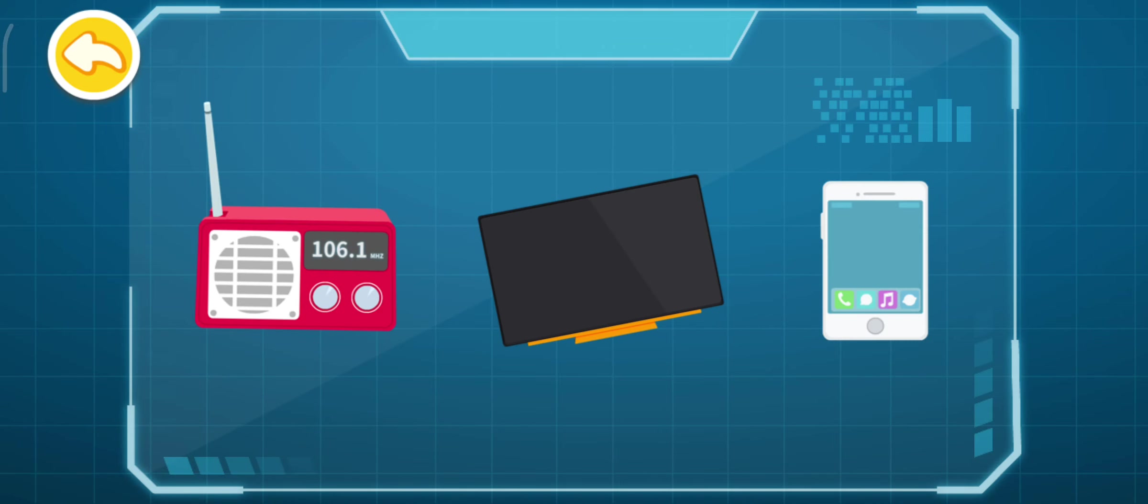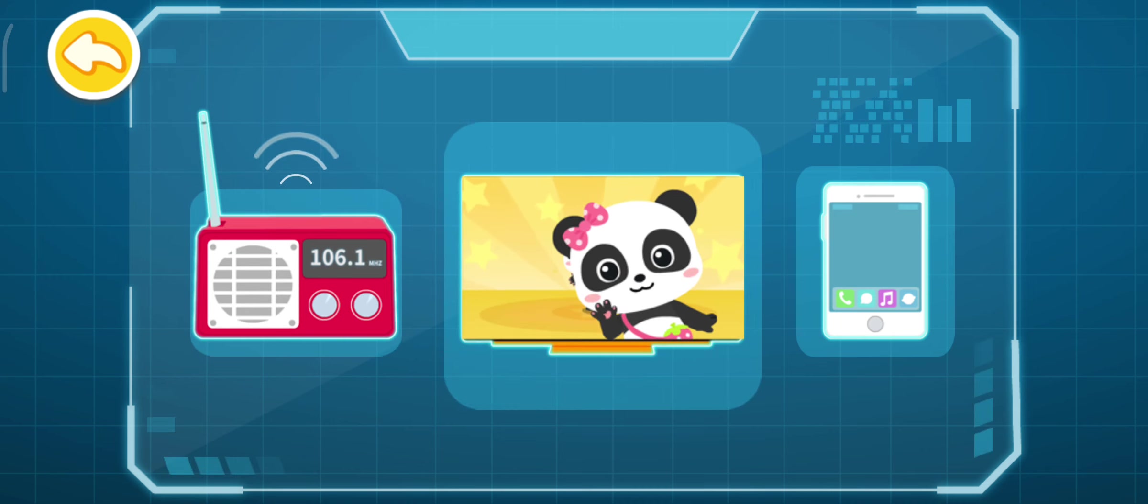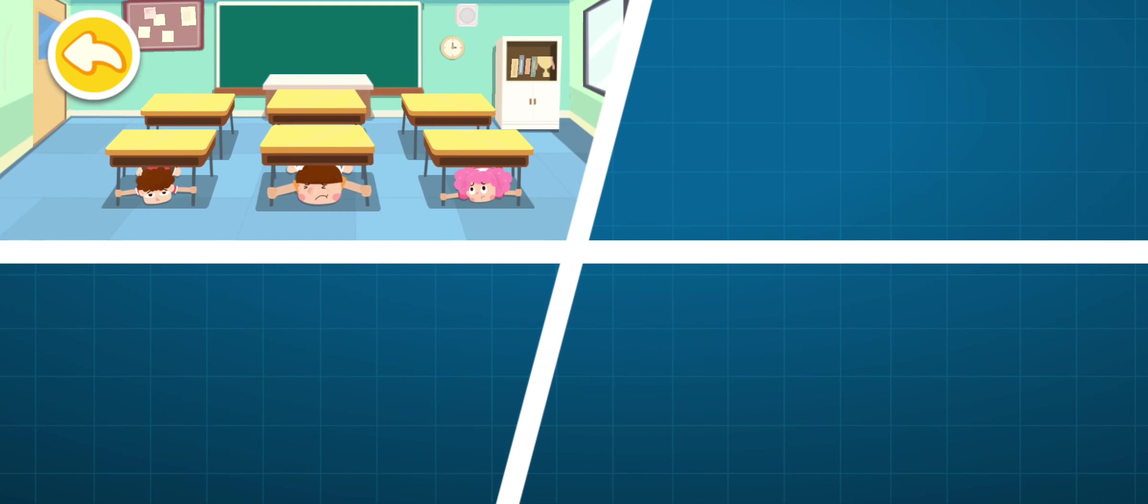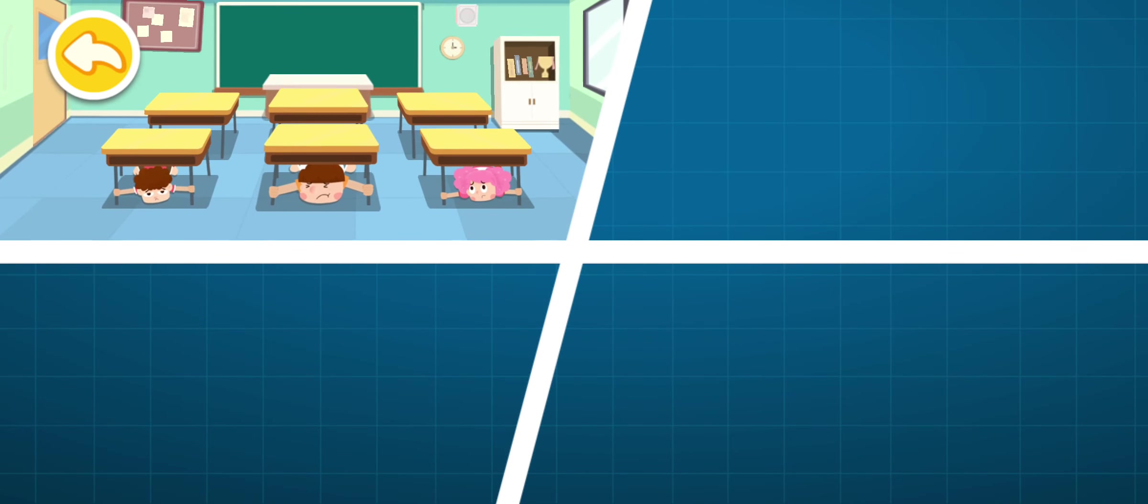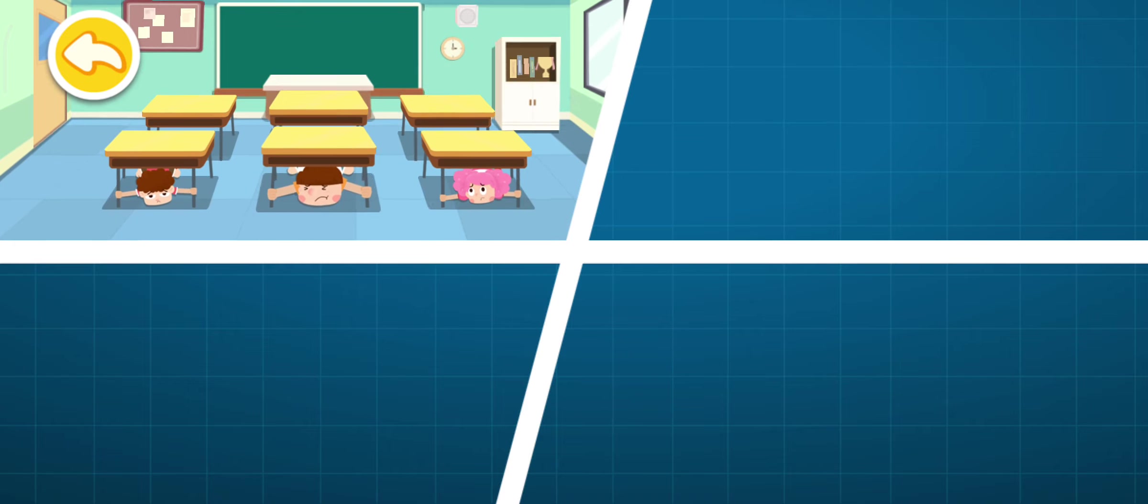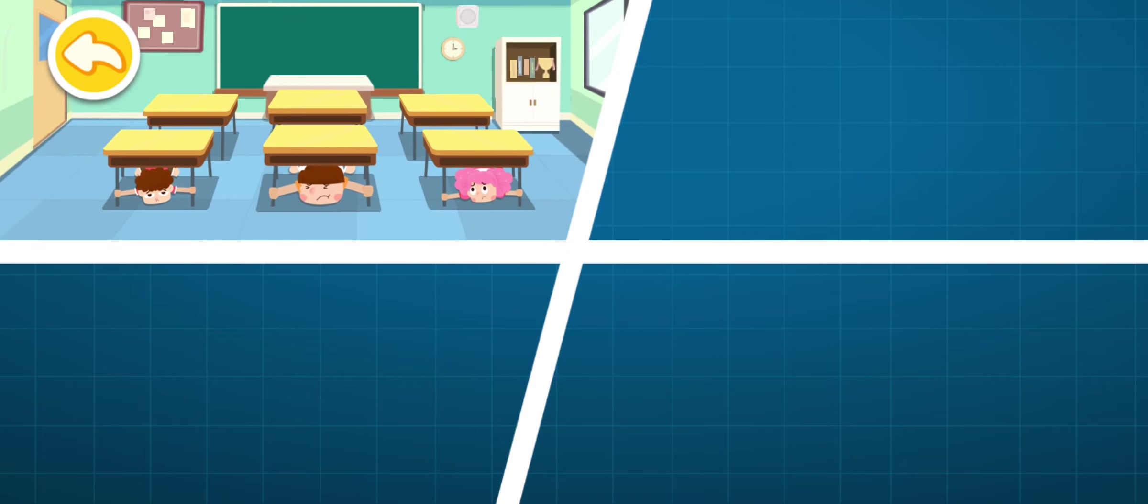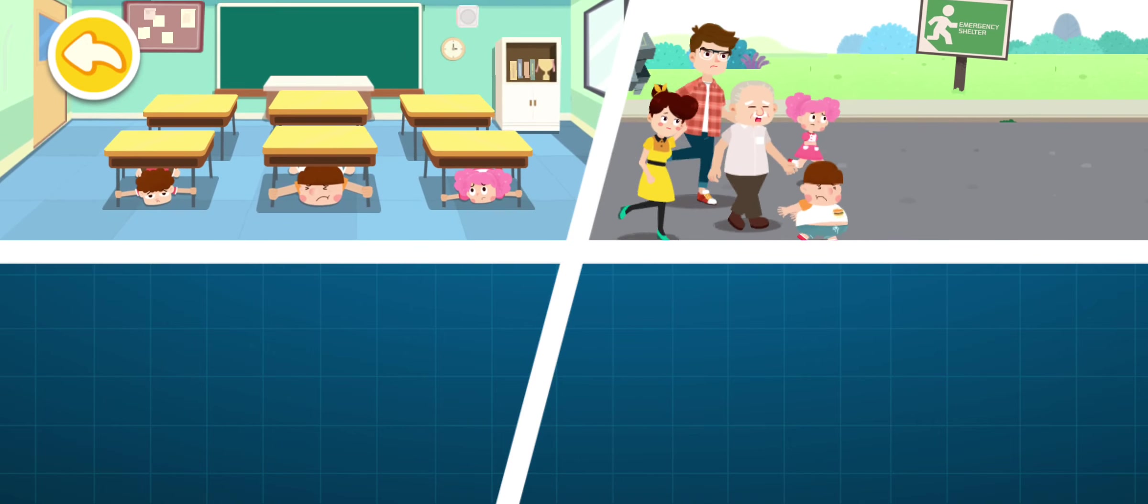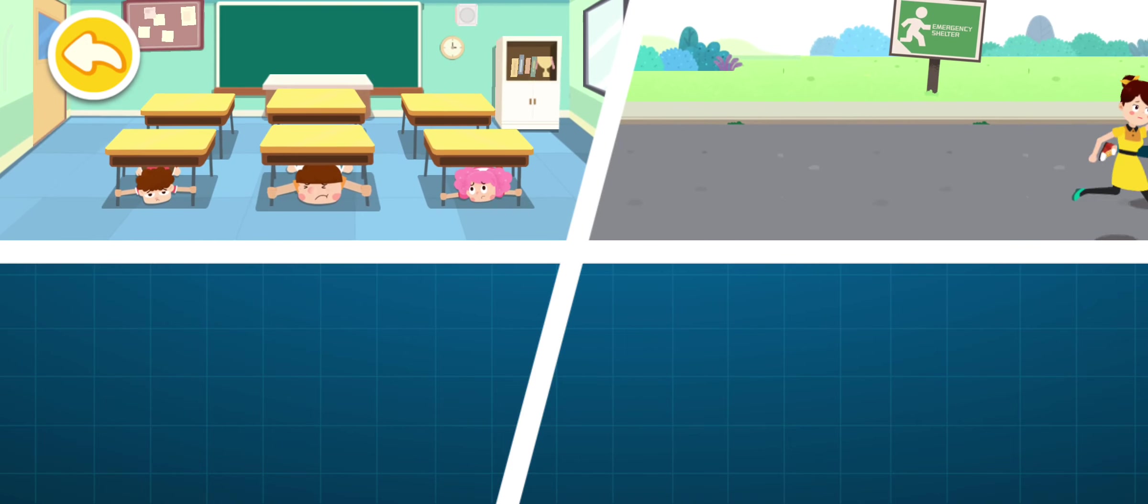Earthquake warning messages can be communicated through radio, television, mobile phones, and other media. Once receiving an earthquake warning message, if you are on a second or higher floor, remember the tips of lie prostrate, cover up, and hold firm, and protect yourself by finding a shelter nearby. If you are on the first floor, or stay outside, immediately run to an open and safe area.